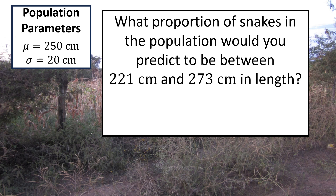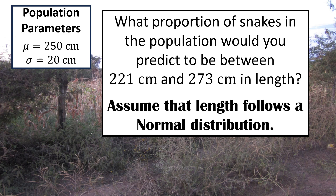Before we get to the new stuff, one more practice problem. We're imagining that we're measuring the length of grass snakes caught at random in Madagascar. We assume a population mean of 250 centimeters in length and a population standard deviation of 20 centimeters. What proportion of snakes would you predict to be between 221 centimeters and 273 centimeters in length? This is a bit of a challenge — pause the video, take it as far as you can, then resume for the solution.